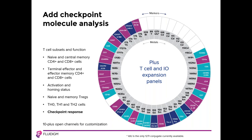The Maxpar Human T-Cell Immuno-Oncology EX Panel Kit provides antibodies for eight key markers of checkpoint response. These include ICOS, CTLA-4, PD-1, TIM-3, LAG-3, 4-1BB, OX-40, and CD95 FAS.